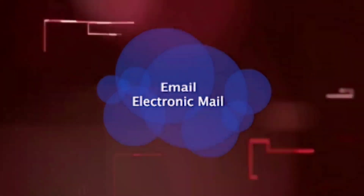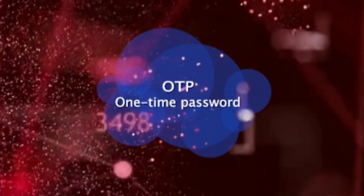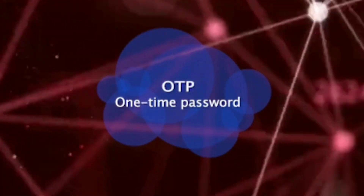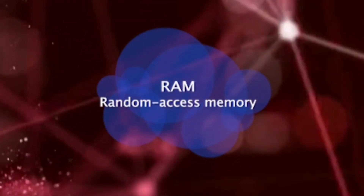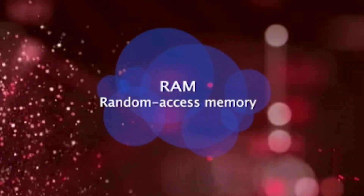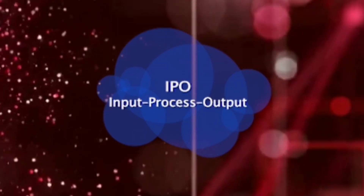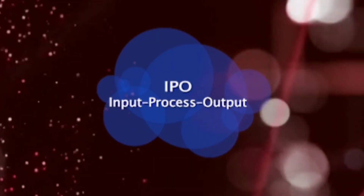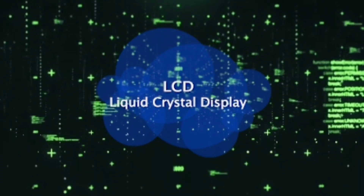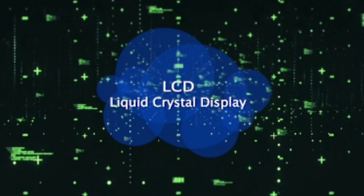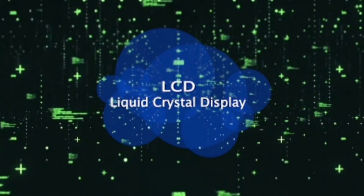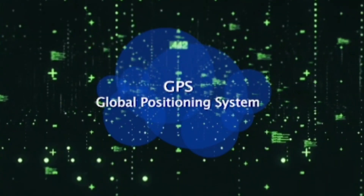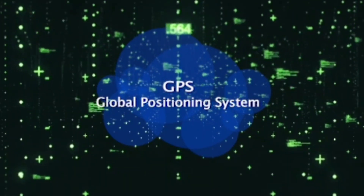Email — Electronic Mail. OTP — One Time Password. RAM — Random Access Memory. IPO — Input Processing Output. LCD — Liquid Crystal Display. GPS — Global Positioning System.